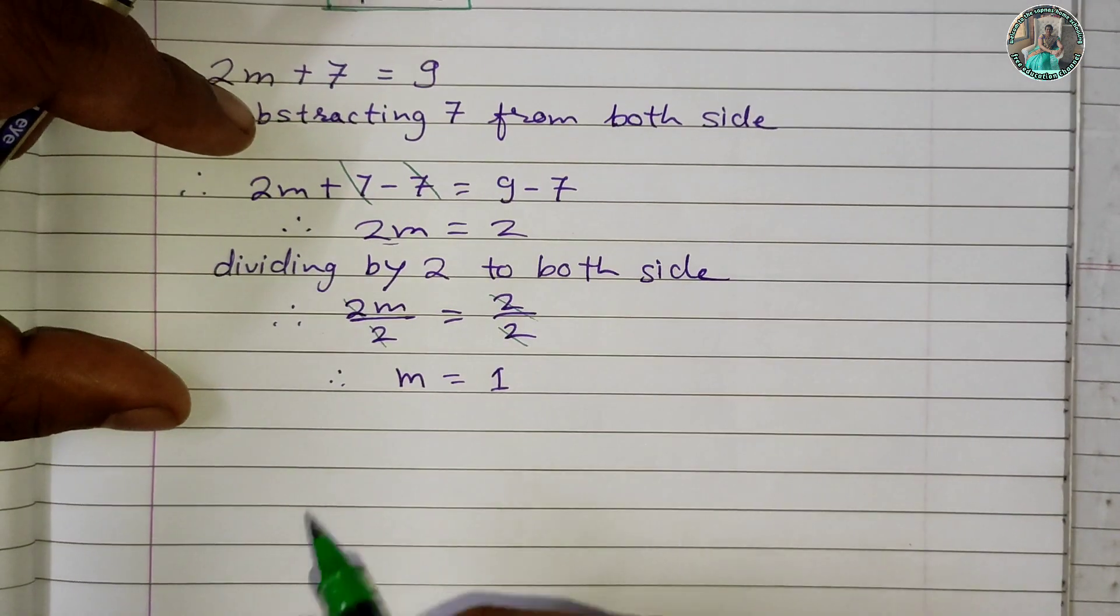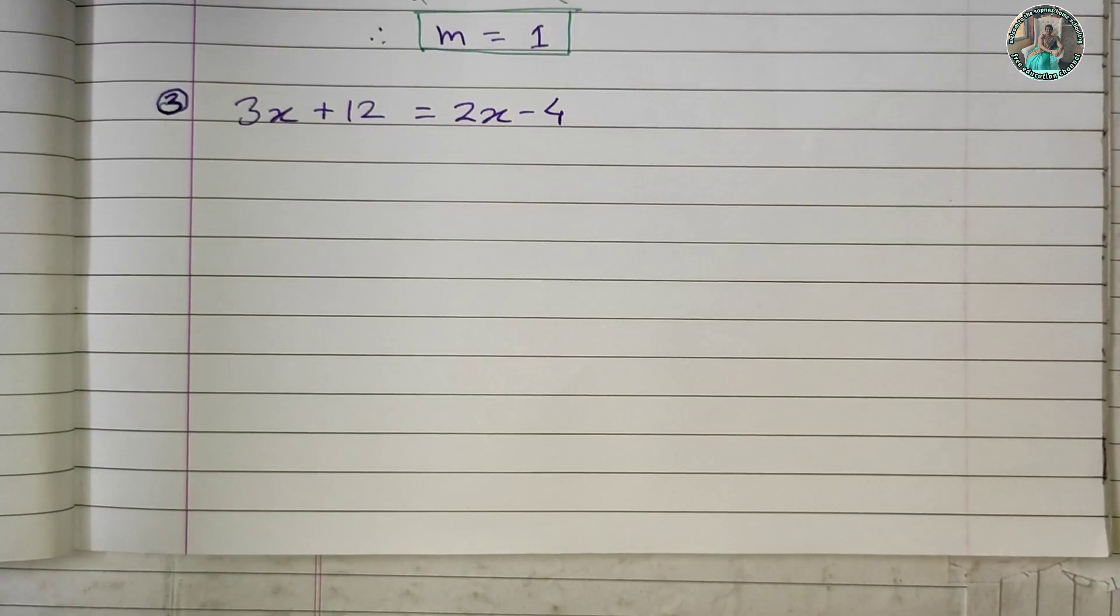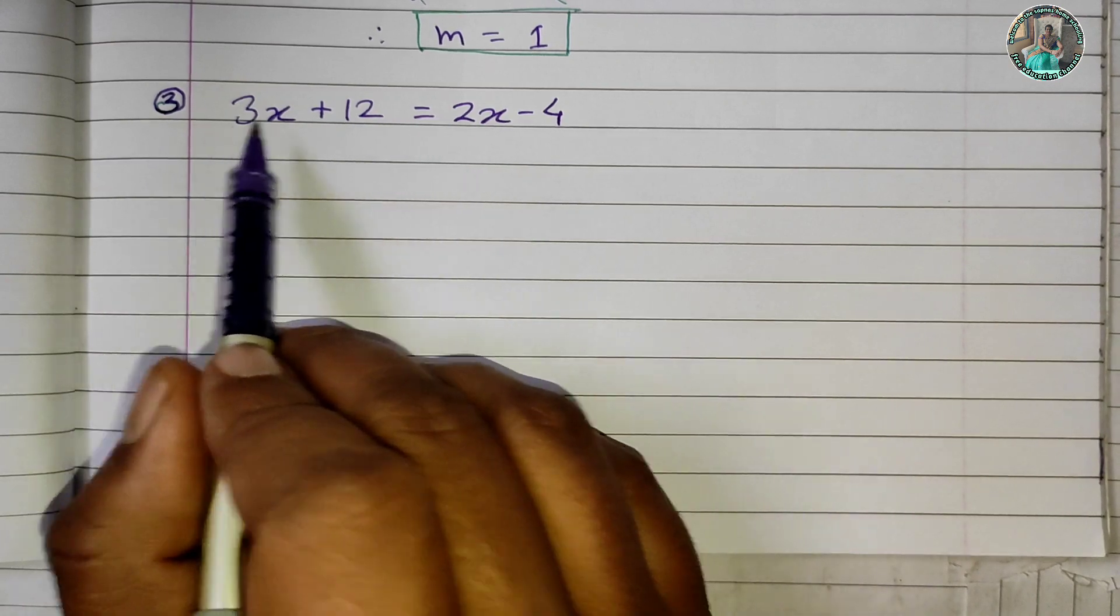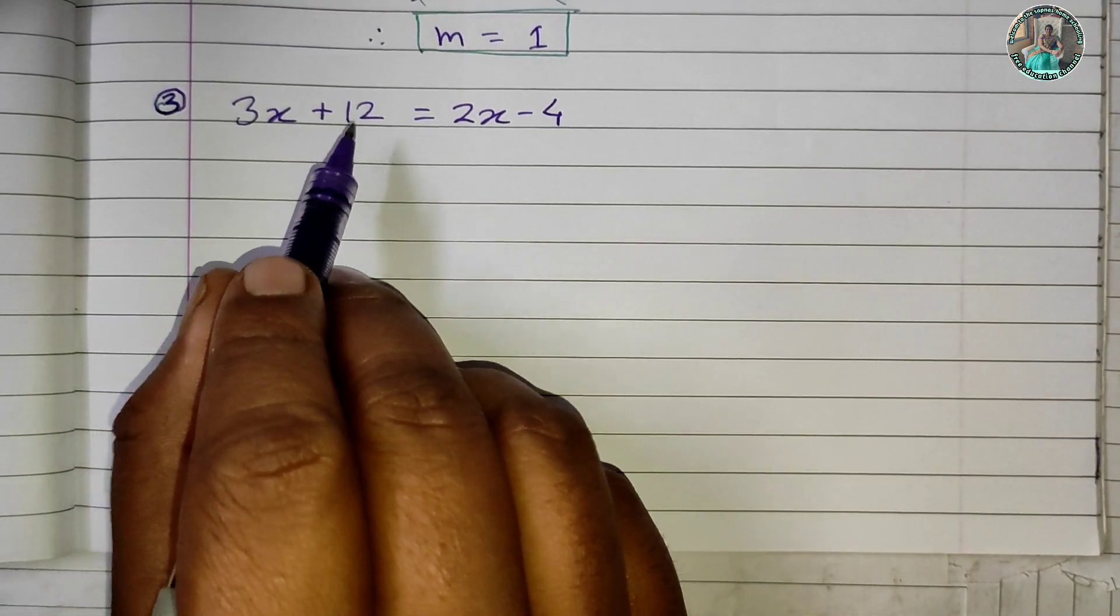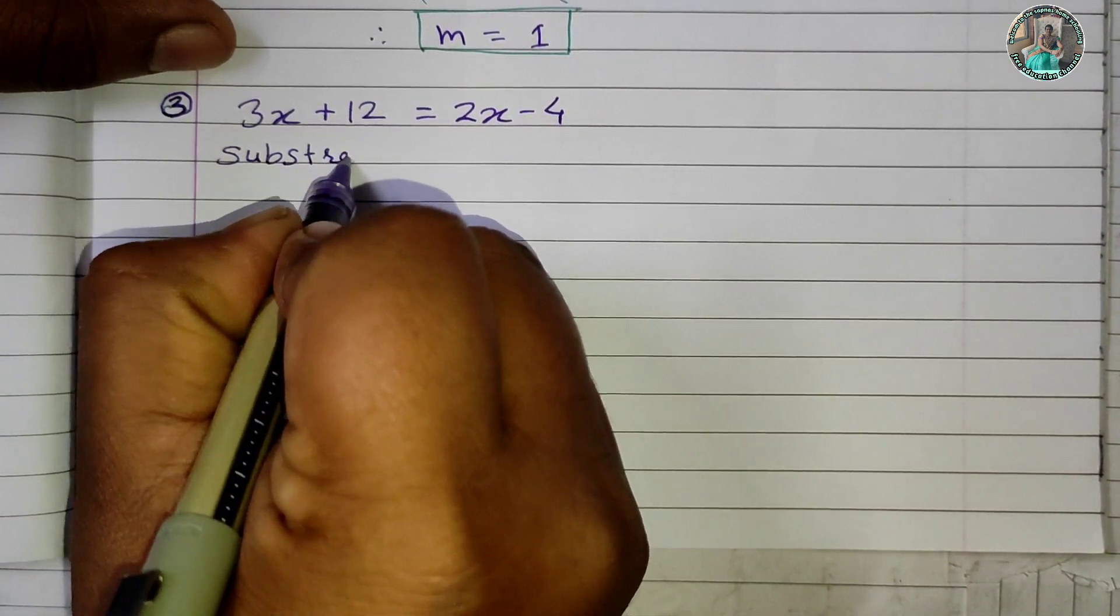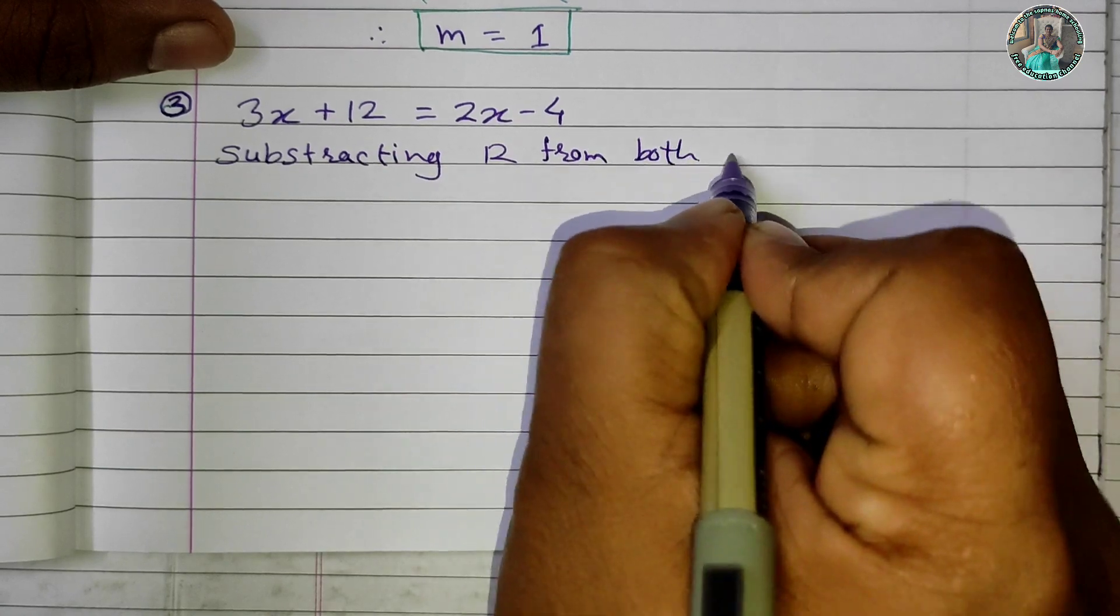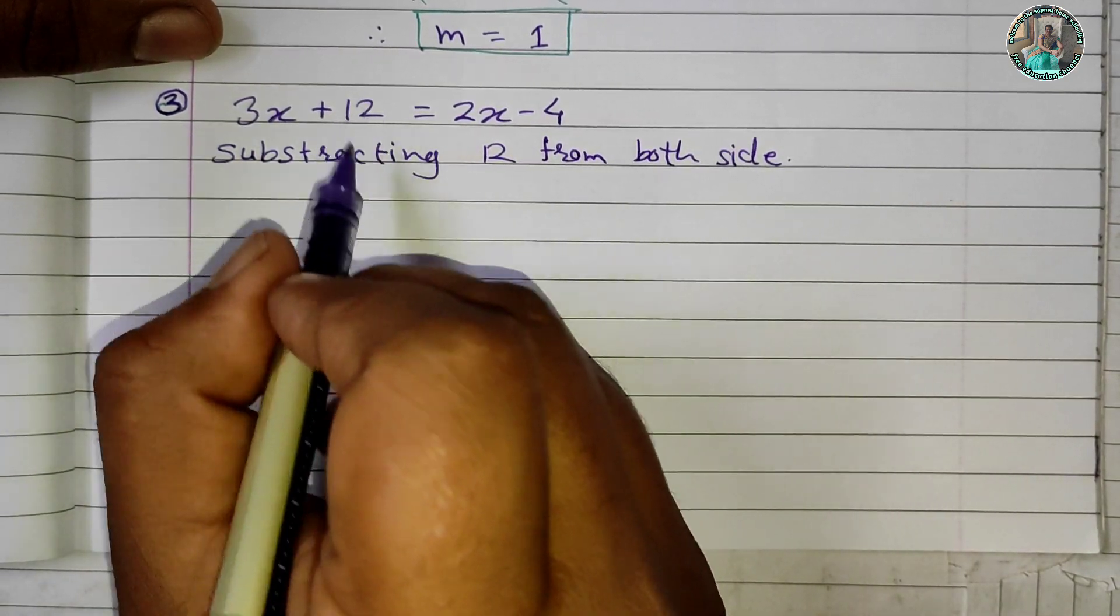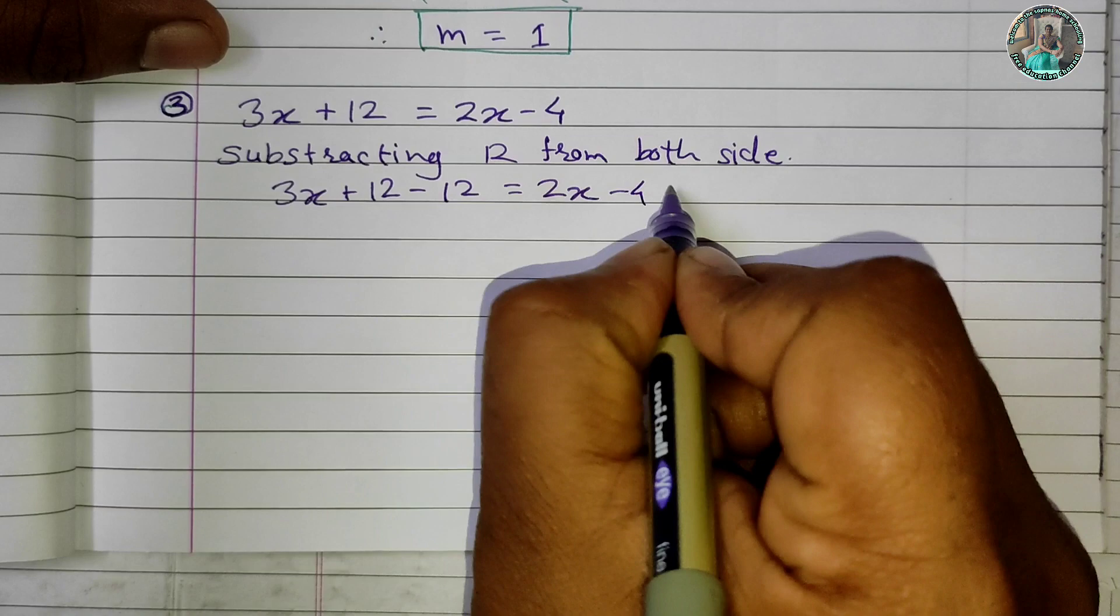Question 3: 3x + 12 = 2x - 4. We need to find the value of x. First, subtracting 12 from both sides: 3x + 12 - 12 = 2x - 4 - 12.